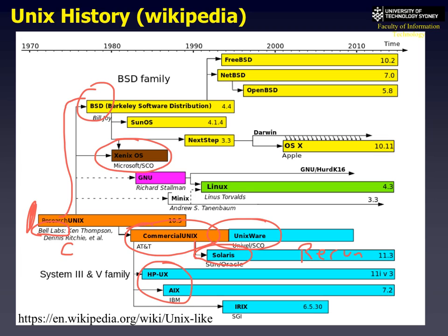Next, there's a guy called Richard Stallman who believed in open source, so he developed a version of Unix completely separate from the Bell Labs research Unix—that's why we have dotted lines. A bit later, a guy called Andy Tenenbaum developed a version of Unix called Minix, which literally fitted on one floppy disk—720K. He fitted an entire operating system on one of these little disks and used it for teaching operating systems.